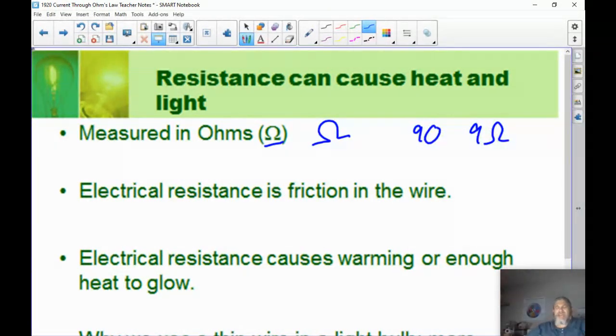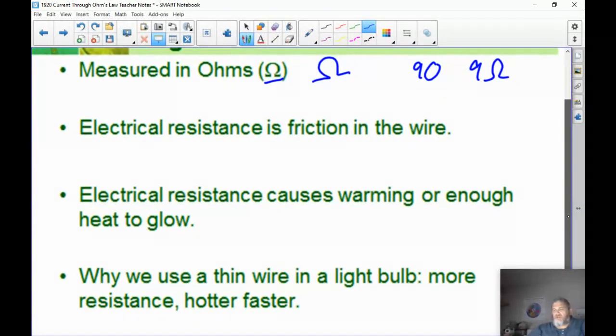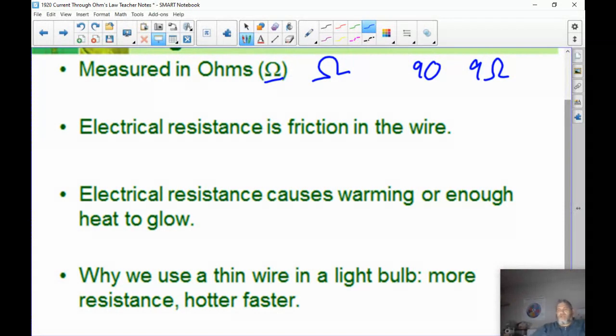Electrical resistance is kind of like friction in the wire, different things in the wire getting in the way of the electrons. One of the end results of that is warming. Electrical resistance can cause heat, and if there's enough current flowing, it can actually cause it to glow. If you have an electric oven or electric stove, you see it all the time because the electricity goes through the burners and they glow and get so hot that they're able to cook.